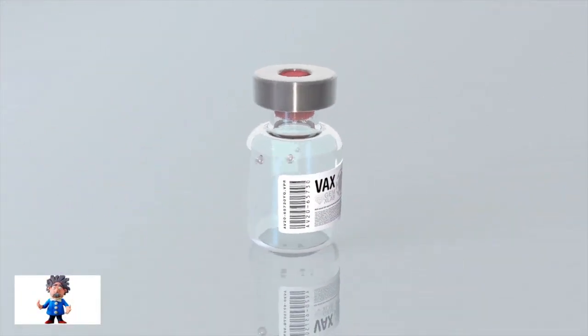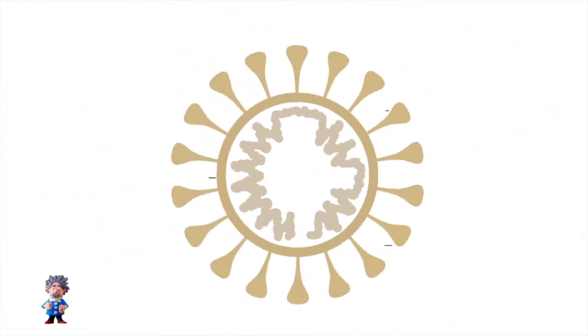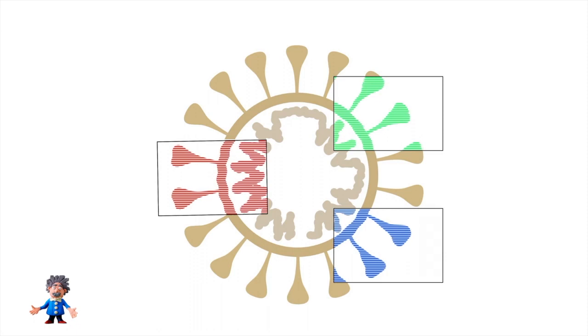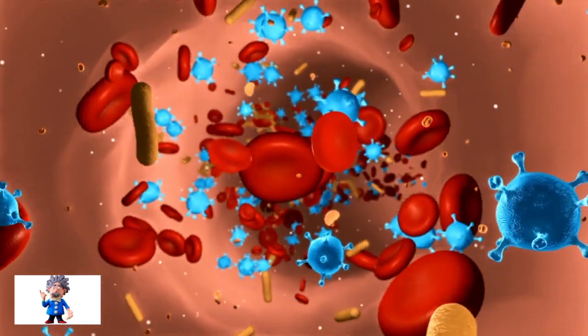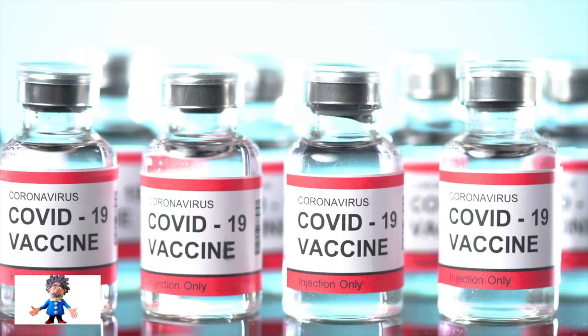Current vaccines have been designed to target the spike protein from the original Wuhan strain. Some of the mutations in this new variant may mean that the virus can spread easily or make the vaccines less effective.